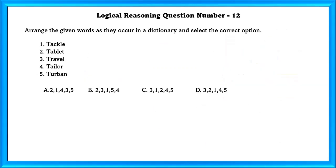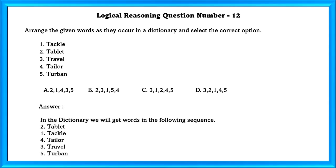Logical Reasoning Question Number 12: Arrange the given words as they occur in a dictionary and select the correct option. In the dictionary, we will get words in the following sequence: Tablet, Tackle, Tailor, Travel, and Turban. So our answer is A.